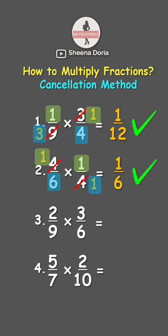Next, 2/9 times 3/6. Here we can see that we can divide 2 and 6 by 2. So that's 2 divided by 2, which is 1, while 6 divided by 2 is 3.